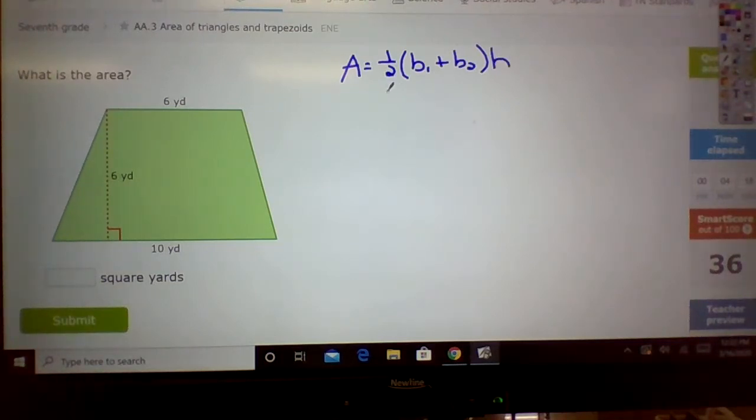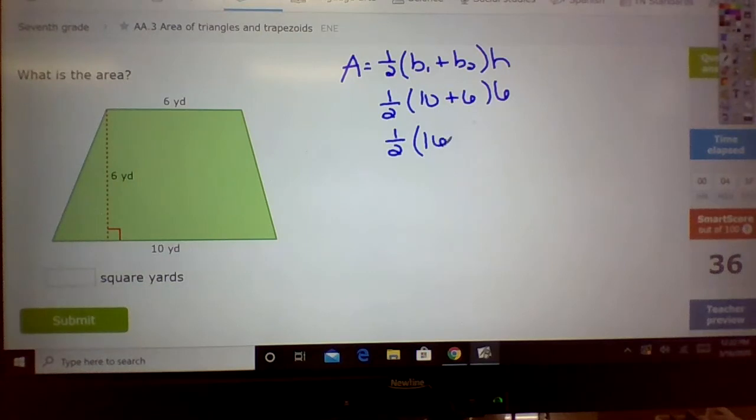So base 1 is 10 plus 6 base 2 and the height is 6. What is, let's do order of operations. What is 10 plus 6? That is 16 times 6. One-half times 16 is 8. 8 times 6 is 48.